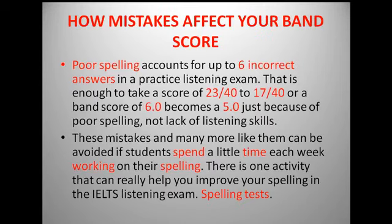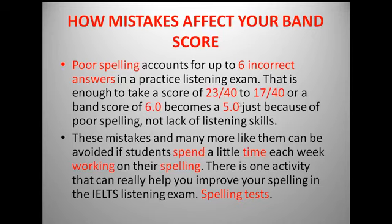Now let me explain how these mistakes affect your band score. Taking the example of spelling mistakes: poor spelling accounts for up to six incorrect answers in a practice listening exam. If you have six incorrect spellings, that would be enough to take your score from 23 out of 40 down to 17 out of 40. Your band score of 6 would just become 5 — not because of a lack of listening skills, but simply because of poor spelling.